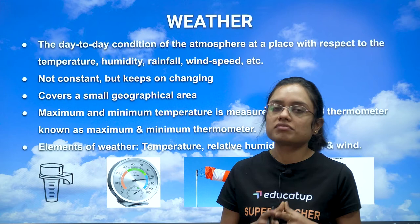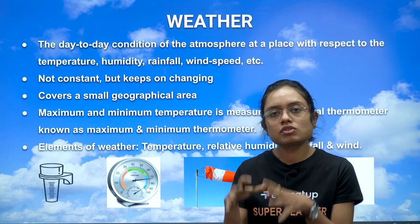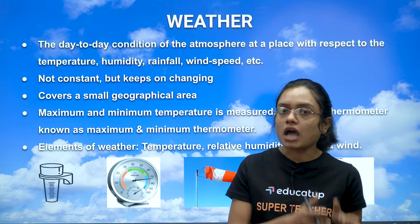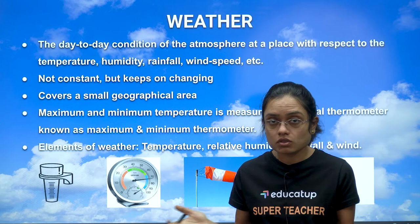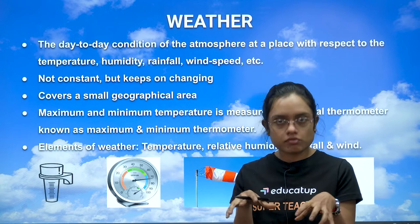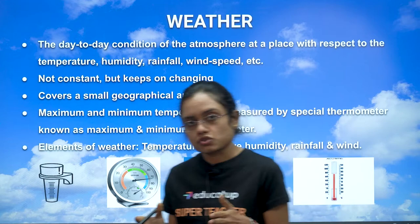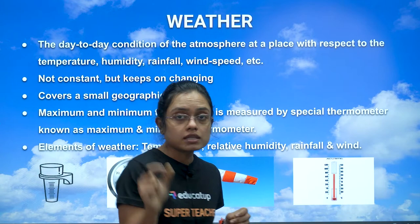Weather covers a small geographical area. For example, Indore has a particular weather, Agra has a different weather, and Jaipur has yet another weather. Weather is specific to a small geographical area — not an entire state like Uttar Pradesh or Rajasthan.